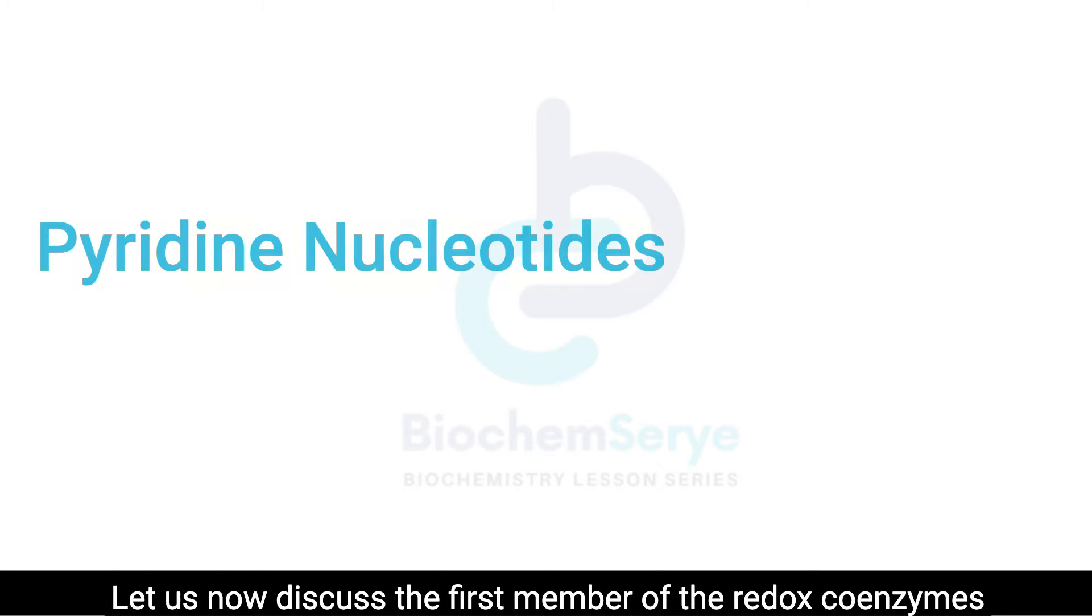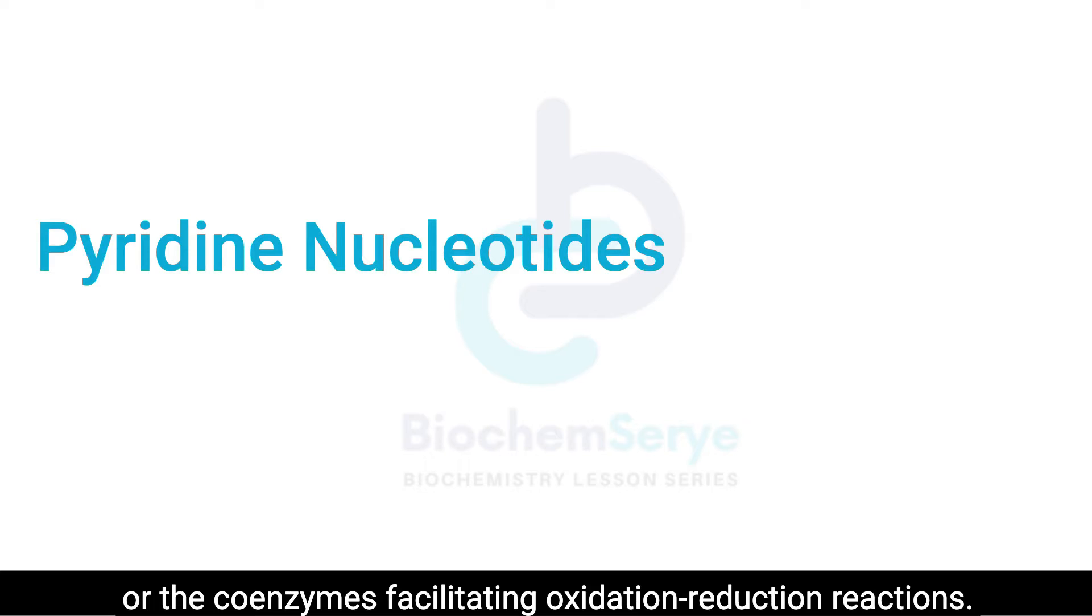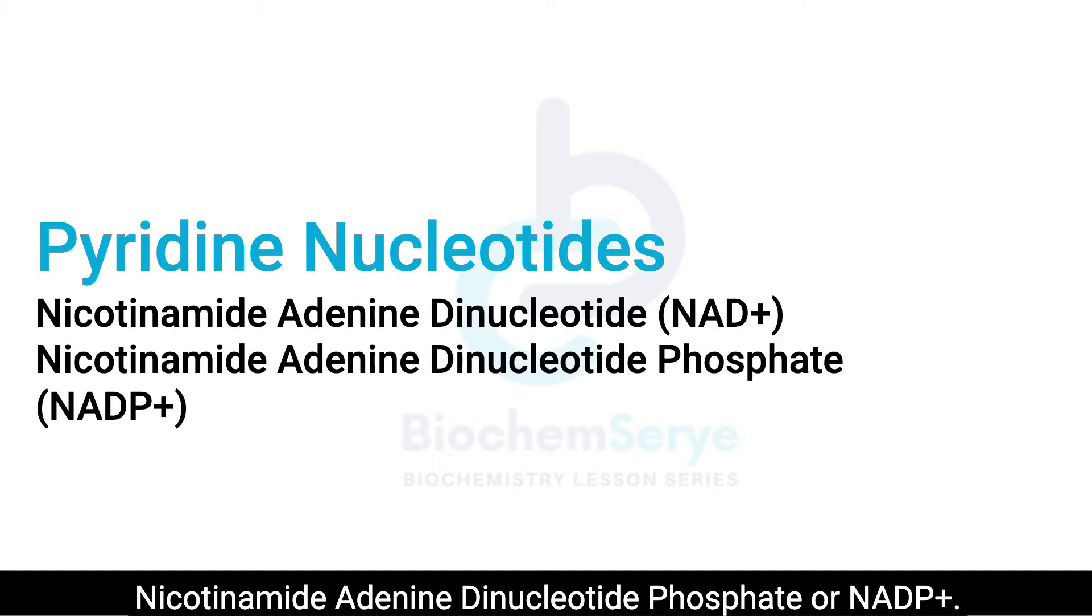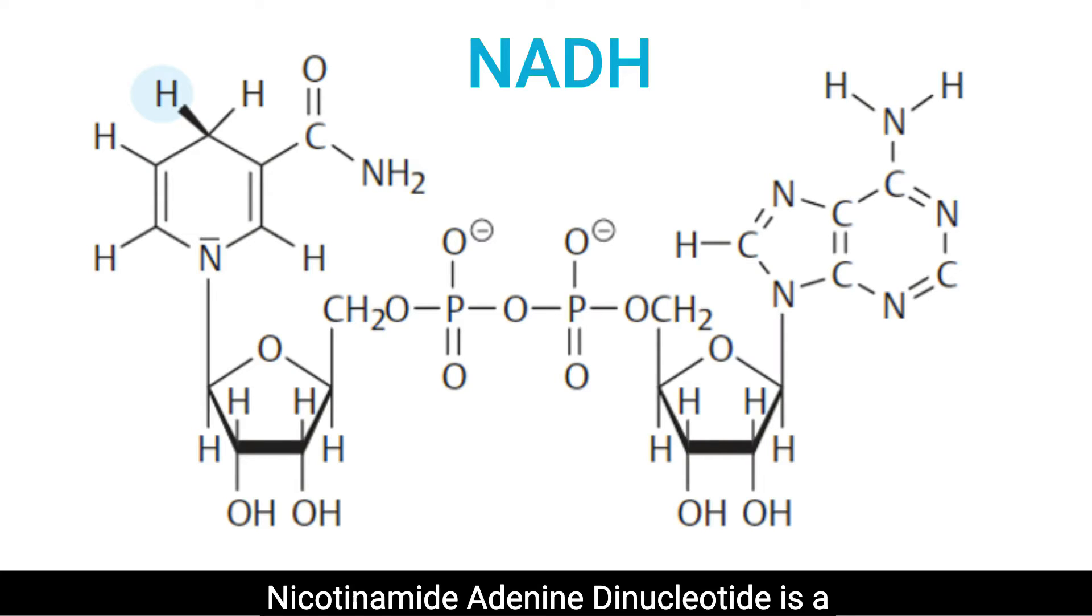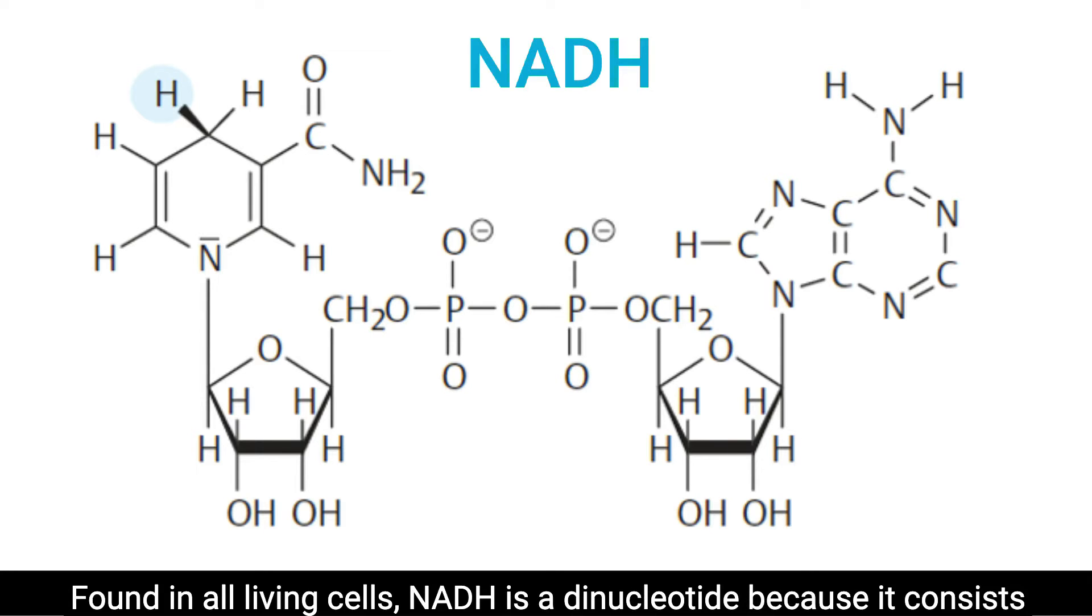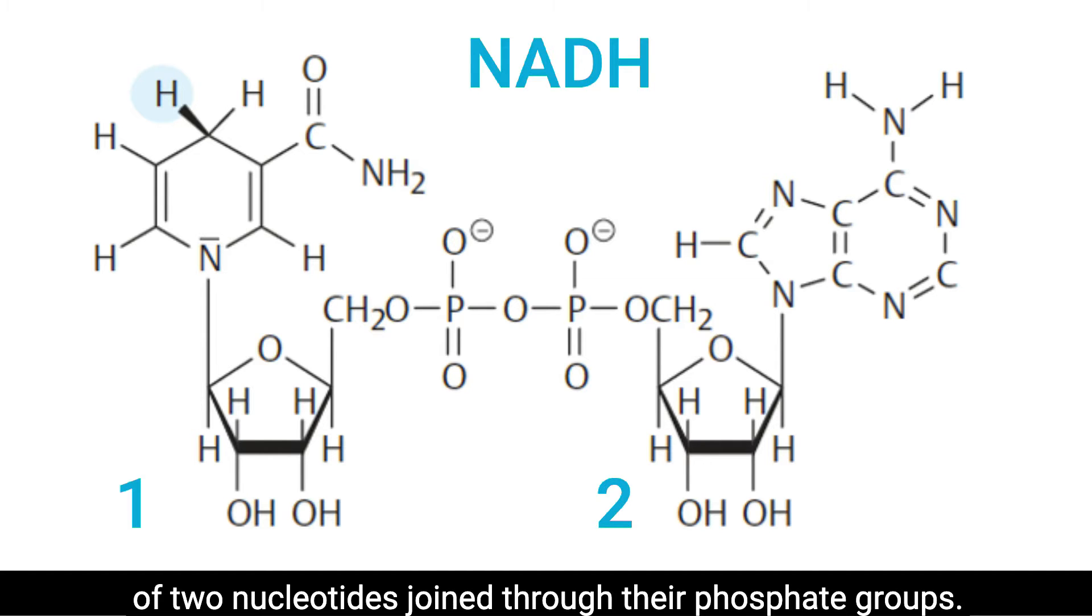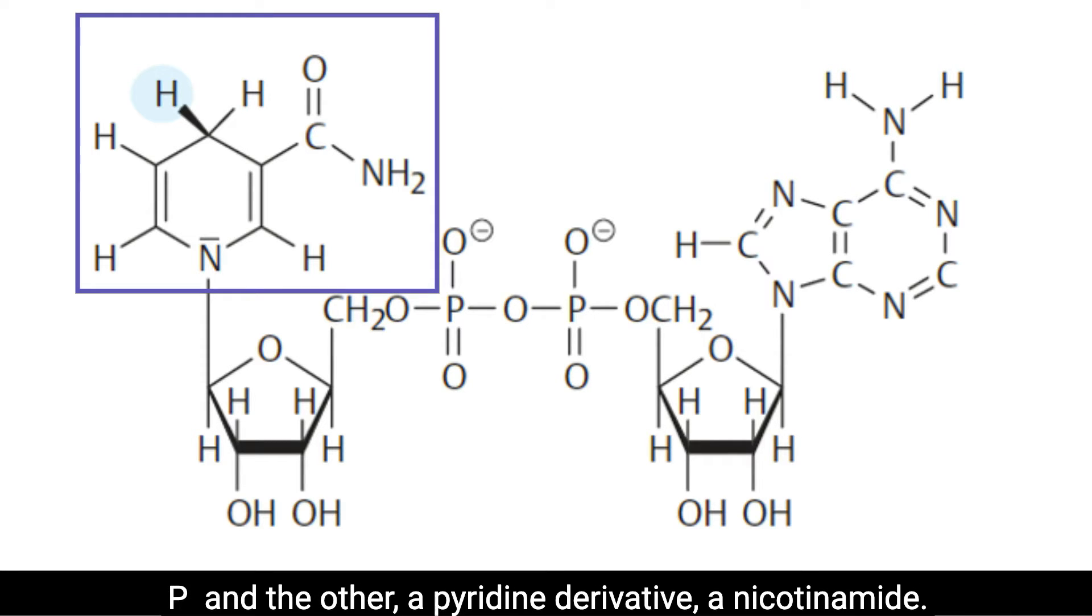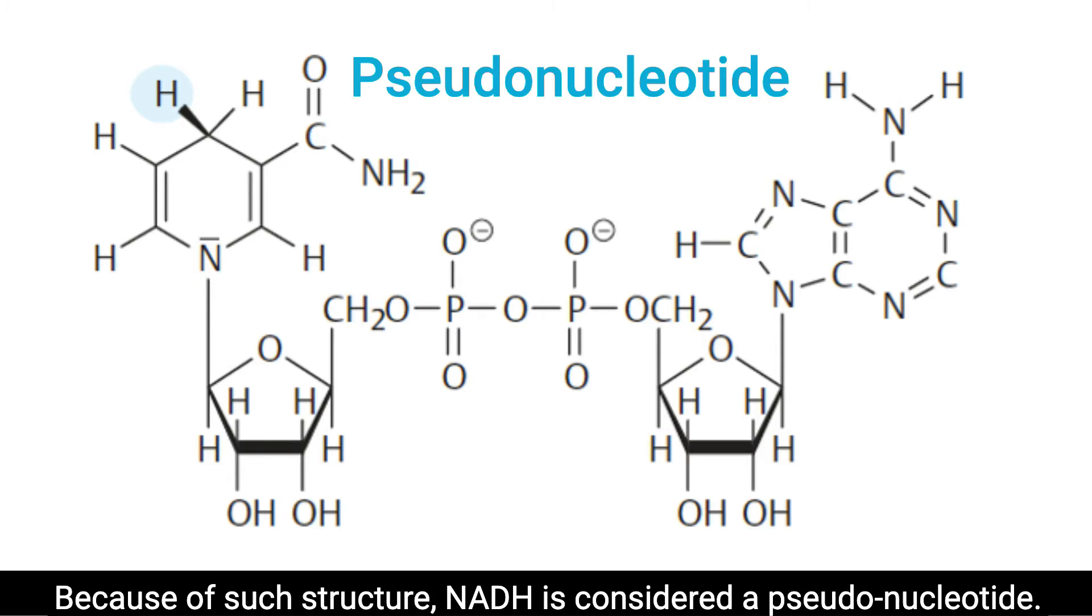Let us now discuss the first member of the redox coenzymes. The first members are the pyridine nucleotides, which are nicotinamide adenine dinucleotide NAD+, and nicotinamide adenine dinucleotide phosphate or NADP+. Nicotinamide adenine dinucleotide is a coenzyme very important to metabolism. Found in all living cells, NAD is a dinucleotide because it consists of two nucleotides joined through their phosphate groups. One nucleotide contains an adenine nucleobase, AMP, and the other, a pyridine derivative, nicotinamide. Because of such structure, NAD is considered a pseudonucleotide.